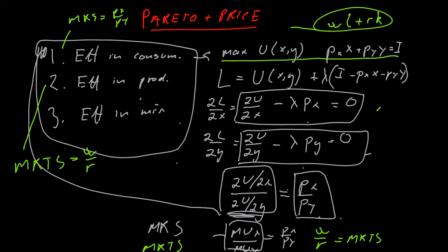So to summarize: the first condition says the marginal rate of substitution must equal the price ratio between X and Y. The second condition says the marginal rate of technical substitution must equal the ratio of wages to the interest rate. The third condition says the marginal rate of substitution must equal the marginal rate of technical substitution. If all three conditions are satisfied, we say the market is Pareto efficient. Of course, often it will not be — often one of these conditions will not be satisfied.